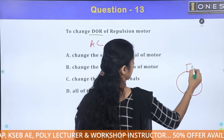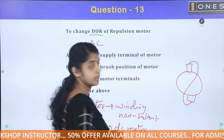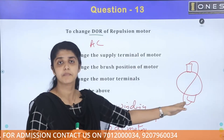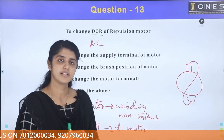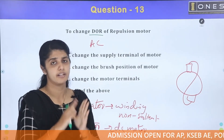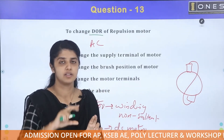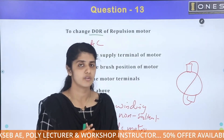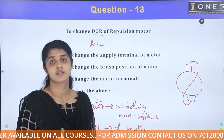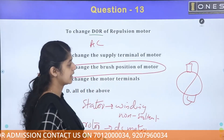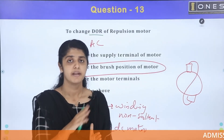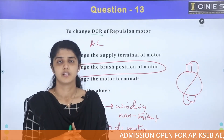The brushes are shorted in this repulsion motor. The brush axis has a small angular displacement from the stator axis, and this displacement angle determines the electric torque produced. To change the direction of rotation of the motor, we need to change the brush position — shifting the brush displacement changes the rotation direction.